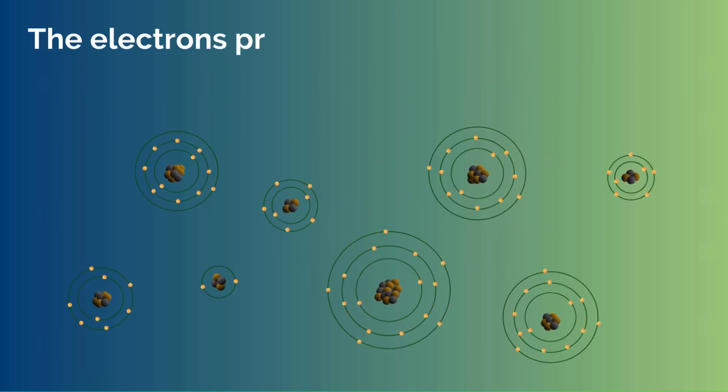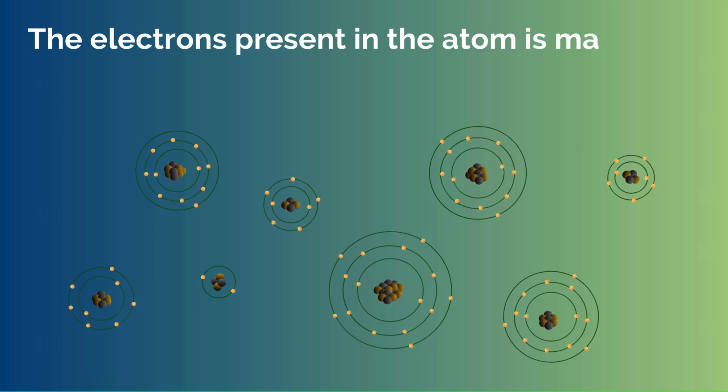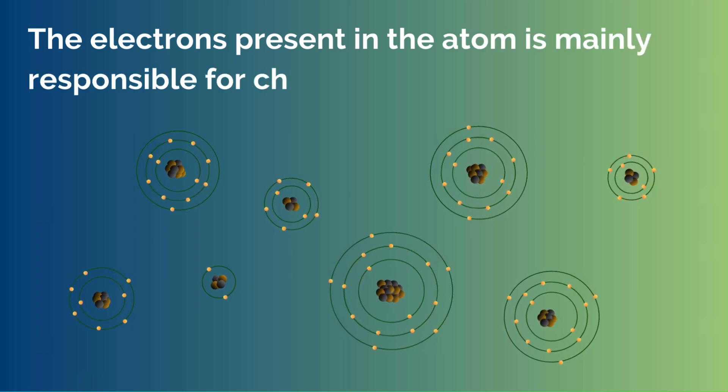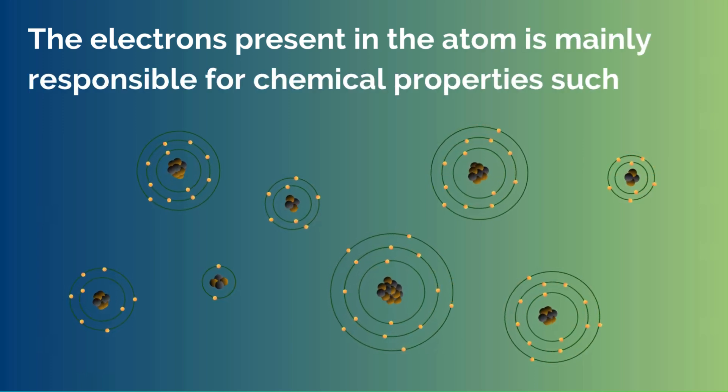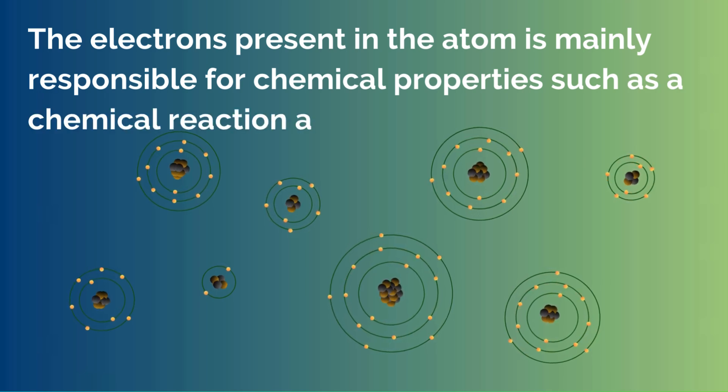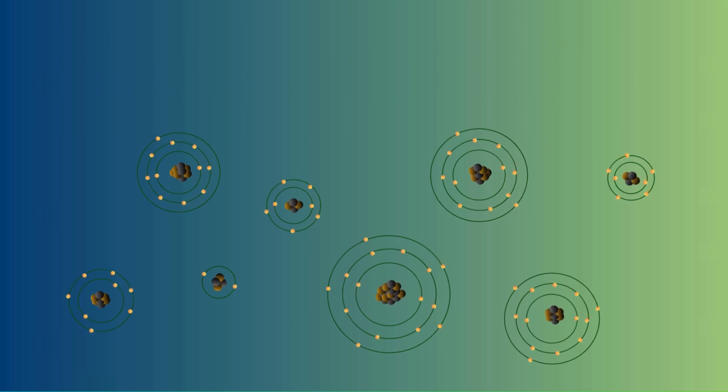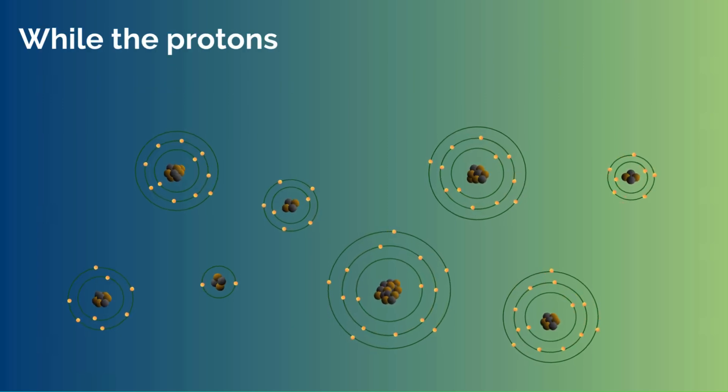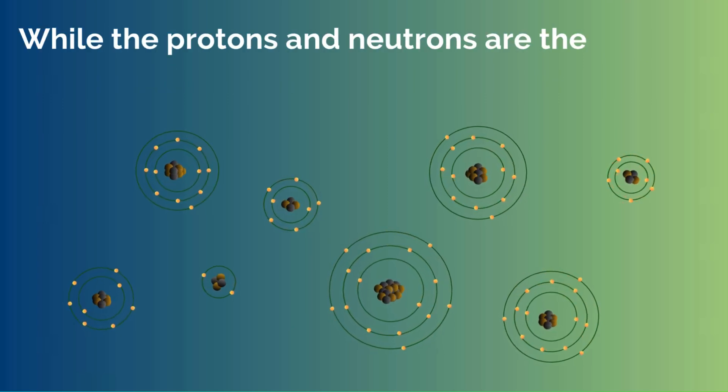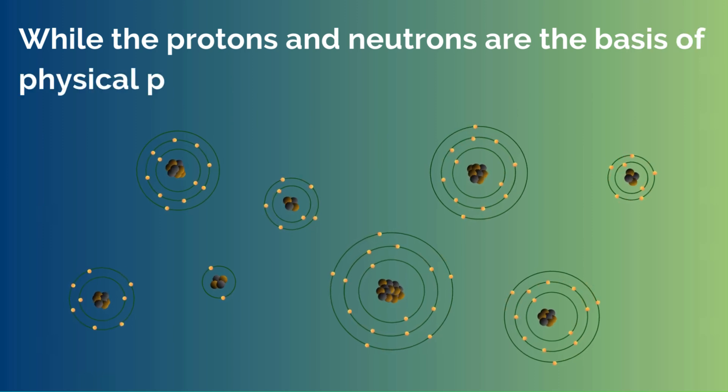The electrons present in the atom of any element are mainly responsible for chemical properties such as chemical reaction and the reactivity of that element. While the protons and neutrons are the basis of physical properties such as mass and density of that element.